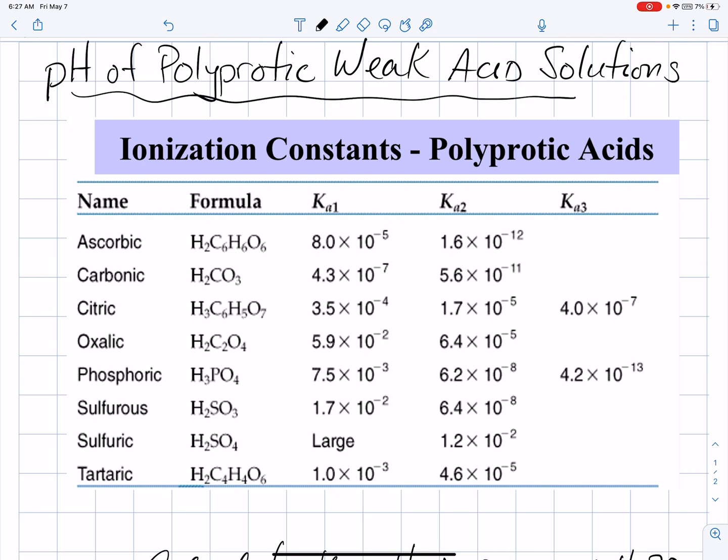You remember that the term polyprotic means that the acid has more than one hydrogen ion to donate. There might be a diprotic acid. For example, carbonic acid down below has two hydrogens in its formula, so it's diprotic.